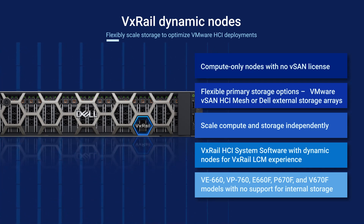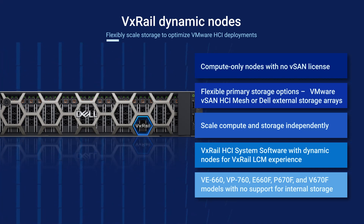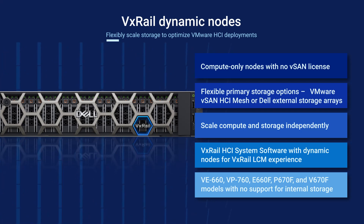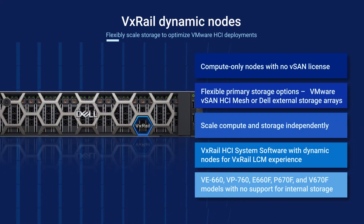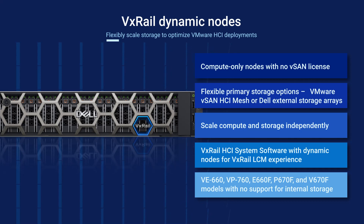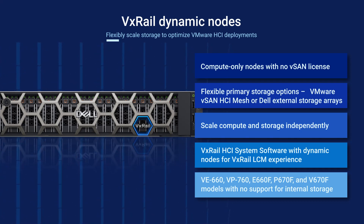At launch time, several models are supported, including the E660F, P670F, V670F, as well as the newer VE660 and VP760 models. The VxRail Manager VM will run from the external primary storage. All configurations, except for internal storage, are available for Dynamic Nodes.